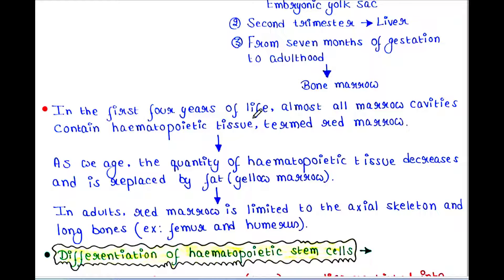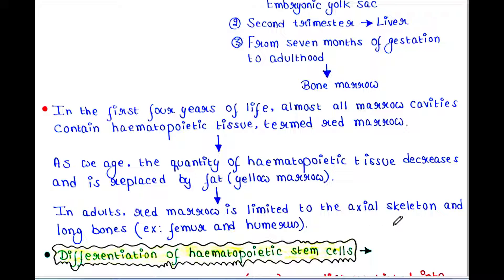In the first 4 years of life, almost all marrow cavities contain hematopoietic tissue, termed red marrow. As we age, the quantity of hematopoietic tissue decreases and is replaced by fat, that is yellow marrow. In adults, red marrow is limited to the axial skeleton and long bones — that is, the femur and humerus.